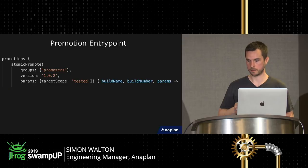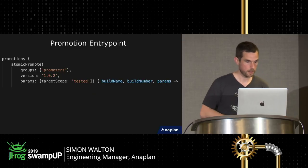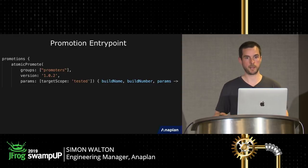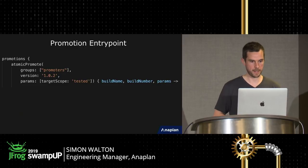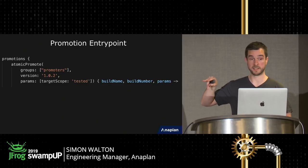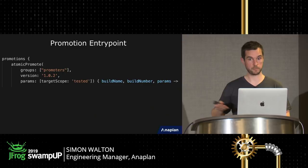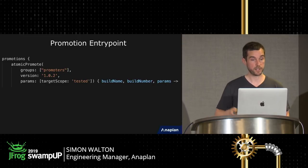So how was Atomic Promote written? JFrog provides a set of DSLs with which you can write Artifactory plugins. Here's what the promotion plugins DSL looks like: you have an opening `promotions` block that tells Artifactory you're defining a promotion plugin, and you name it — in our case `atomicPromote`. Then you give it four parameters. There's not much documentation for these parameters except in the examples on GitHub, so that's where to look.